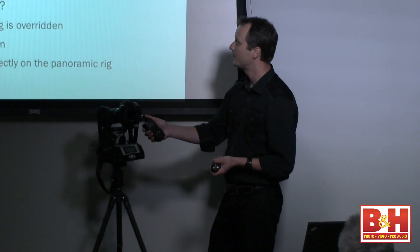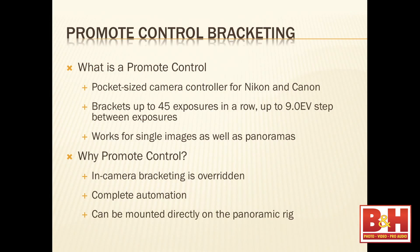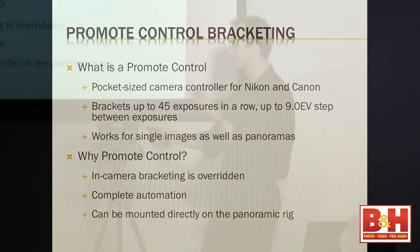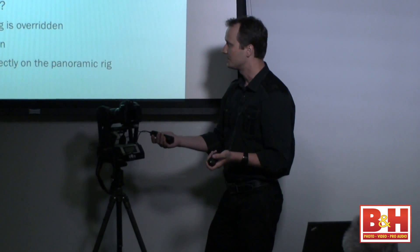It connects to the camera over USB and entirely disregards what the camera can do in terms of bracketing. It doesn't even use bracketing in camera. It basically just shifts your shutter speeds according to the program you put in here. Compatible with Nikon and Canon, brackets up to 45 exposures in a row. Somebody actually asked us to do that. Up to 9 EV steps between exposures. That is way more than any camera can capture. Works for single images as well as panoramas.